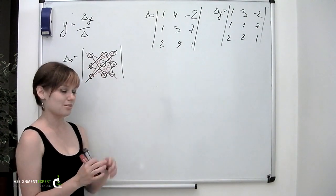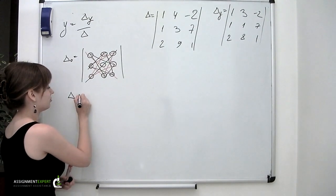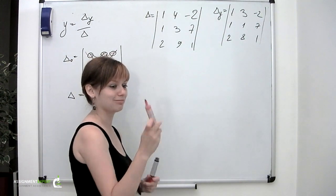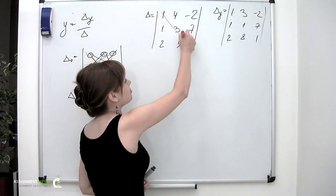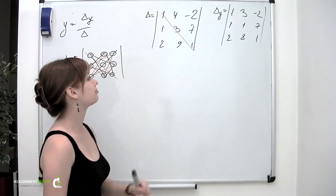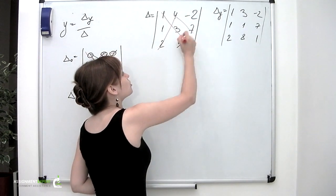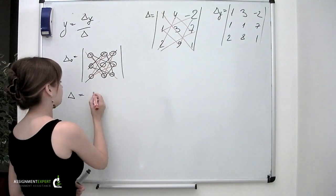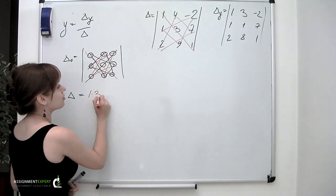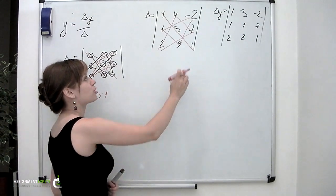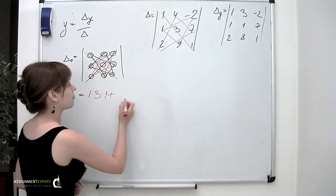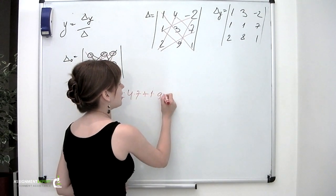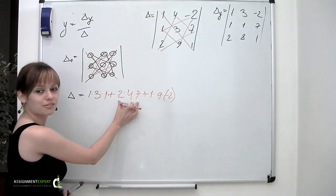To calculate delta, we form two mathematical stars. First, the red star along the main diagonal and its triangles: 1 multiplied by 3 and by 1, plus 2 multiplied by 4 and by 7, plus 1 multiplied by 9 and by minus 2. These three triplets form the first star.